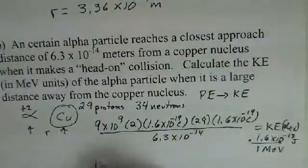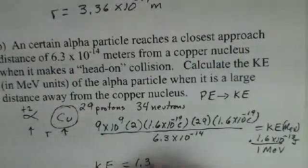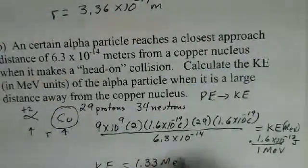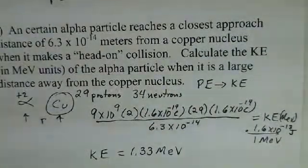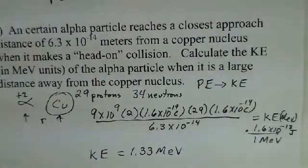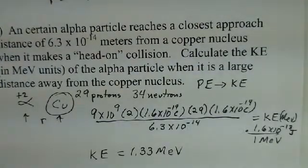Hopefully you've done that on your own. Comparing to my answer: 1.33 MeVs. So the kinetic energy of the alpha particle far away is 1.33 MeVs. That's an example of calculations related to alpha particles approaching a nucleus — it's not everything there is to the Rutherford Scattering Experiment, but it gives you a flavor of this closest approach and reminds you about kinetic energy being converted to potential energy.